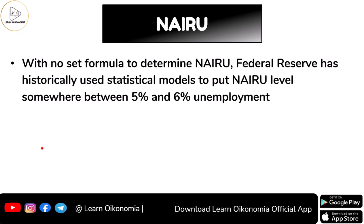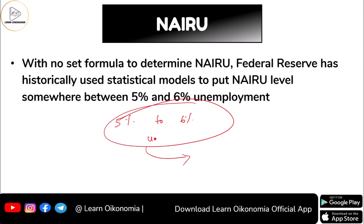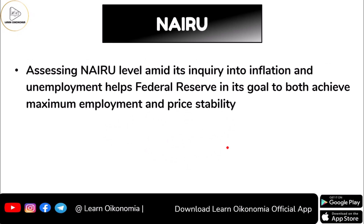We have to understand that there is actually no set formula to determine the particular rate of NAIRU. Non-accelerating inflation rate of unemployment cannot be fixed by a specified formula or method. In such a scenario, what the Federal Reserve has done is use statistical methods historically to place NAIRU between five to six percent unemployment. This five to six percent unemployment range is considered as NAIRU by the Federal Reserve.